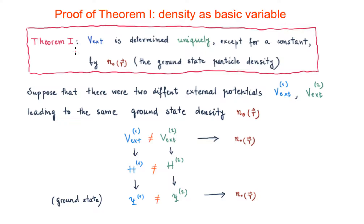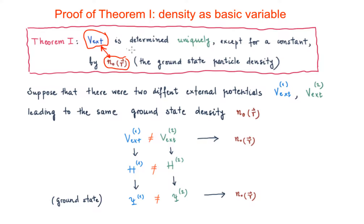Let's remember Theorem 1: the external potential is uniquely determined, except for a constant, by the ground state particle density. If the external potential is determined uniquely by the ground state electronic density, then the Hamiltonian is also determined, and from the Hamiltonian we can get any property of the solid.